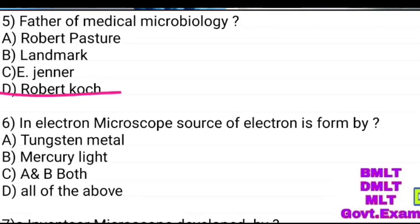In an electronic microscope, the source of electron is from: tungsten metal, armored mercury light, A and B, all of the above. Answer: tungsten metal.